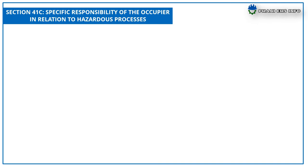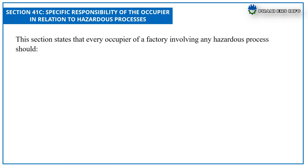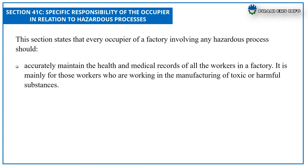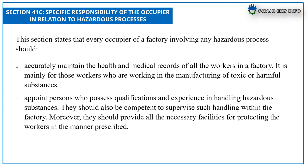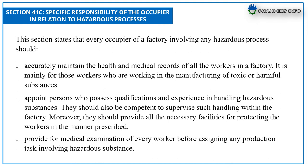Section 41C: Specific Responsibilities of the Occupier in Relation to the Hazardous Process. This section states that every occupier of a factory involving any hazardous process must accurately maintain the health and medical records of all workers, mainly those working in the manufacturing of toxic or harmful substances. They must appoint a person who possesses the qualification and experience in handling hazardous substances and is competent to supervise such handling within the factory. Moreover, they should provide all necessary facilities for protecting the workers in the prescribed manner, and provide for medical examination of every worker before assigning any production tasks involving hazardous substances.